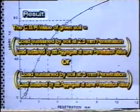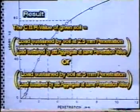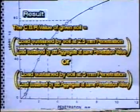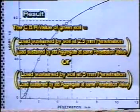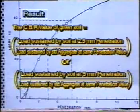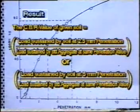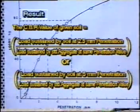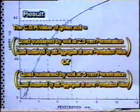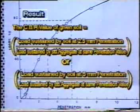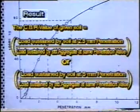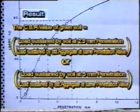Plot the graph between penetration and load. Take the load values corresponding to 2.5 mm and 5 mm penetration. Report the CBR value as the load sustained by the soil sample at 2.5 mm penetration divided by the load value of the standard aggregate at 2.5 mm penetration. CBR value is usually adopted at 2.5 mm penetration. If the CBR value at 5 mm penetration is more than at 2.5 mm, the test is to be repeated. If similar results are obtained again, the CBR value at 5 mm penetration may be taken as the CBR value.